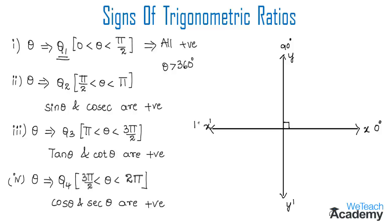When the ray reaches the position of the x-dash axis it makes 180 degrees with the x-axis. When it rotates further to the y-dash axis it makes 270 degrees. When the rotating ray returns to the x-axis it makes a complete angle of 360 degrees.